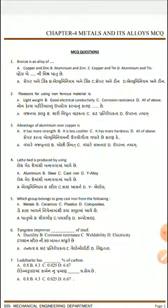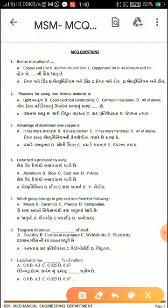Bronze is an alloy. When we combine copper and tin, we get bronze. If we combine copper and zinc, we get brass. So the answer for bronze is copper and tin.